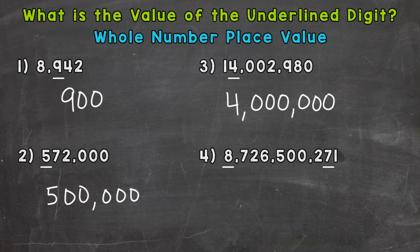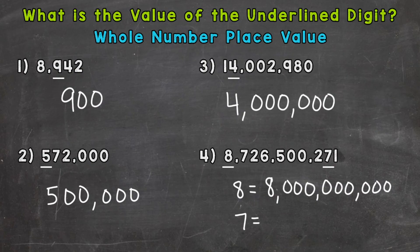And lastly, number 4, where we actually have two digits underlined. So we have an 8 and a 7. So I'll put the 8 equals and the 7 equals. So our number there is 8,726,500,271. And the value of the 8, well, let's see what place the 8 is sitting in. And it's sitting in the billions place. So the value of the 8 is 8 billion. And then we need to take a look at the 7, which is sitting in the 10s place. So the value of that 7 would be 70.